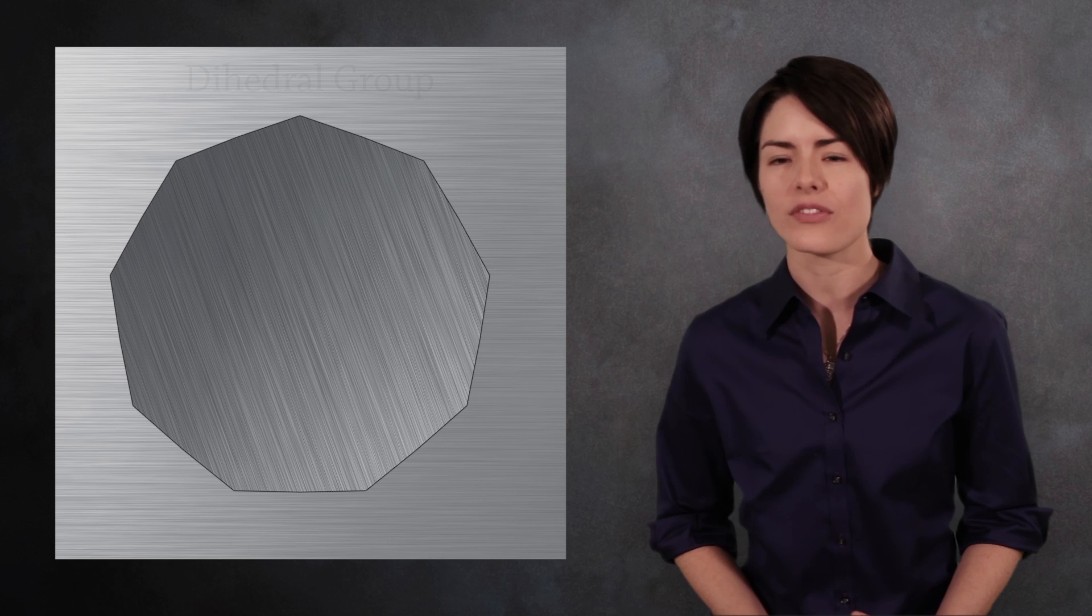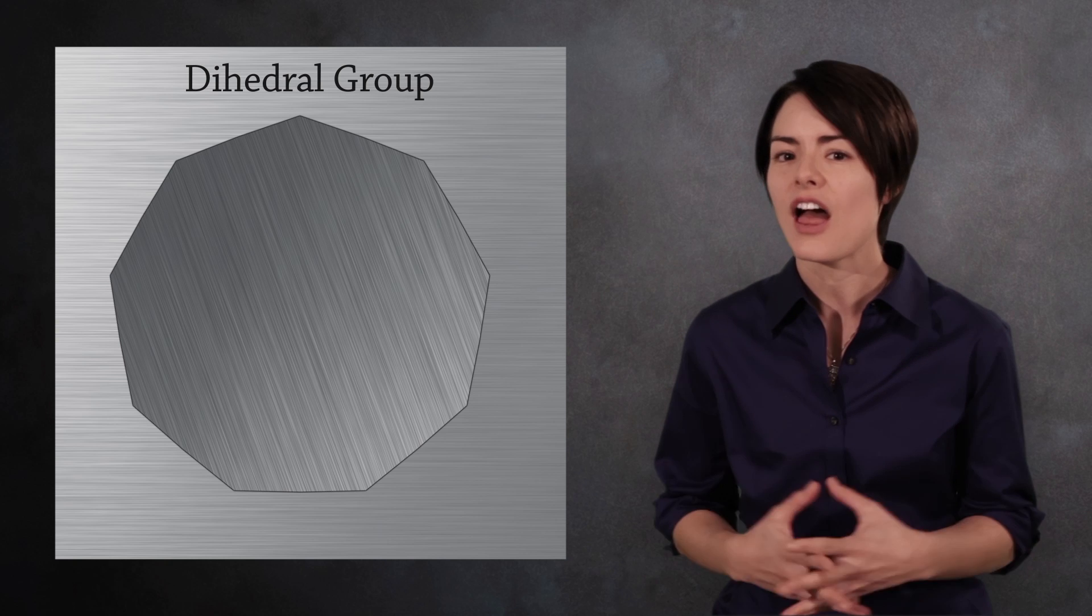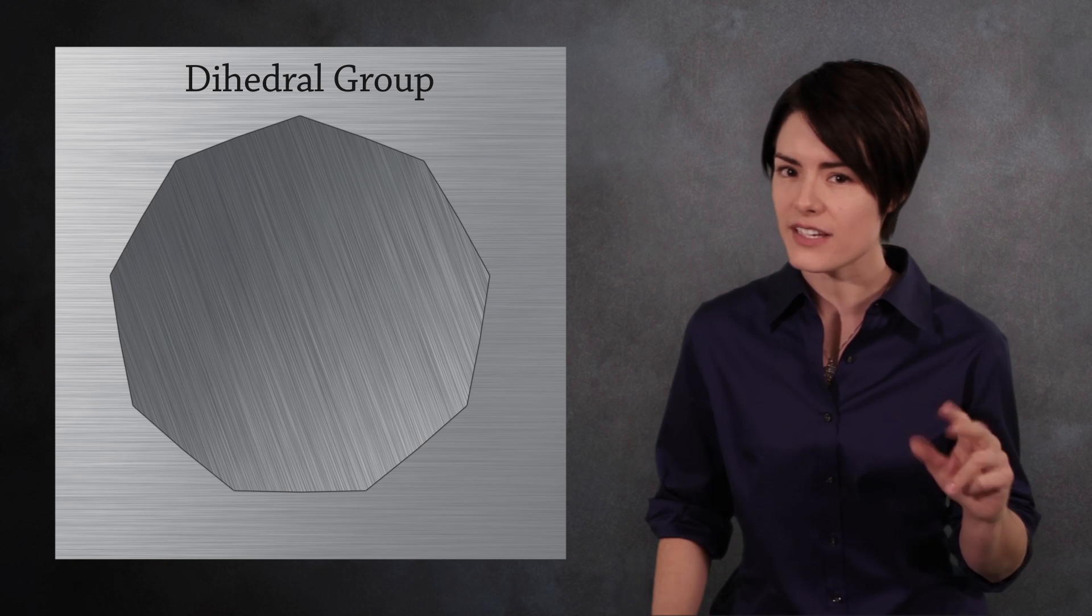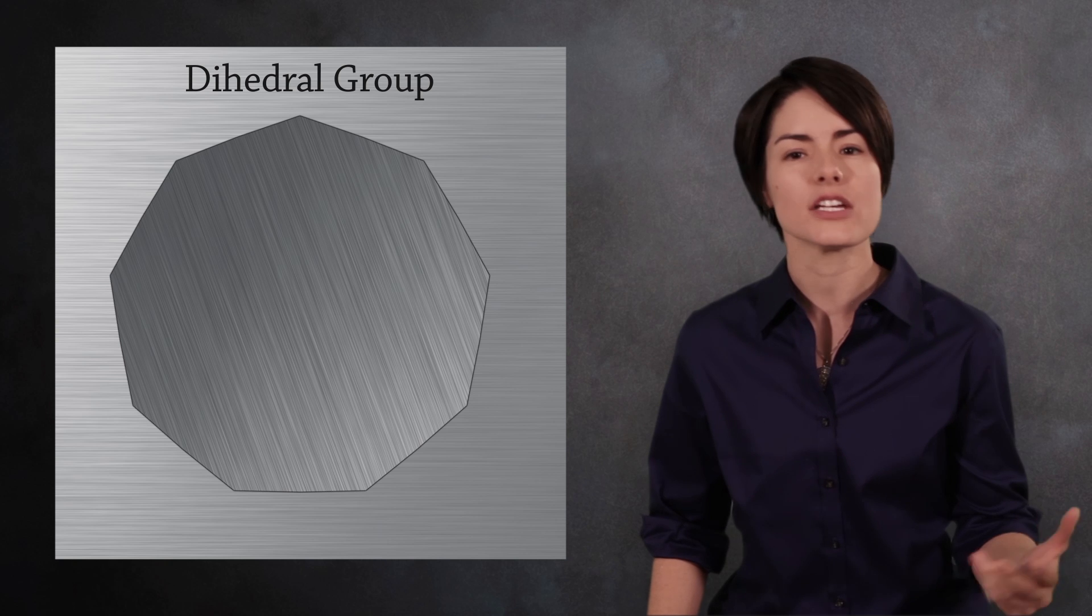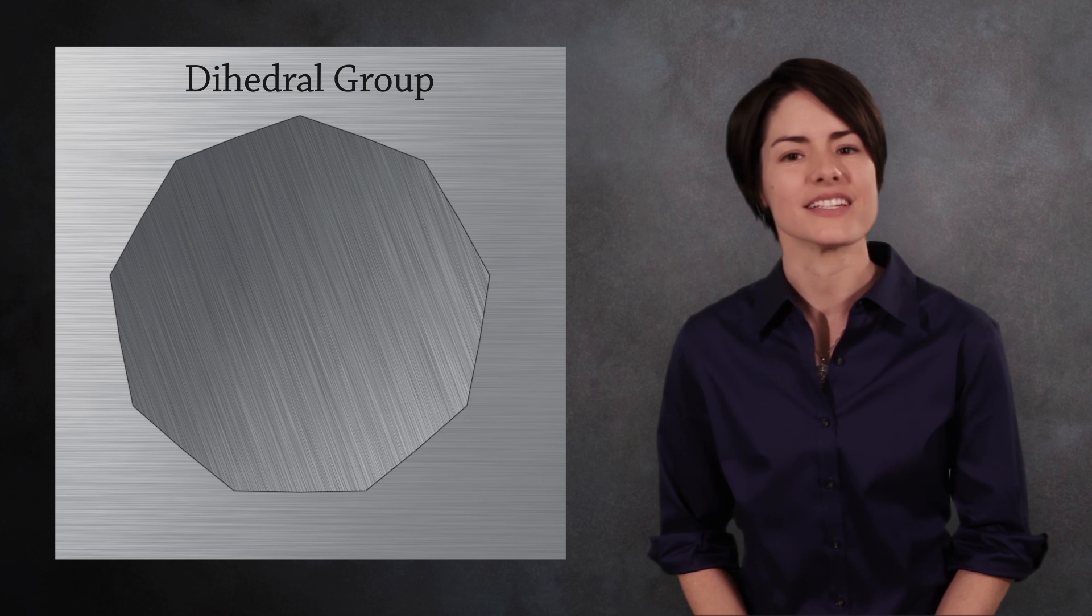When the shape is a regular polygon, the group of symmetries is called the dihedral group. The word dihedral means two faces and is related to polyhedron, which means many faces.